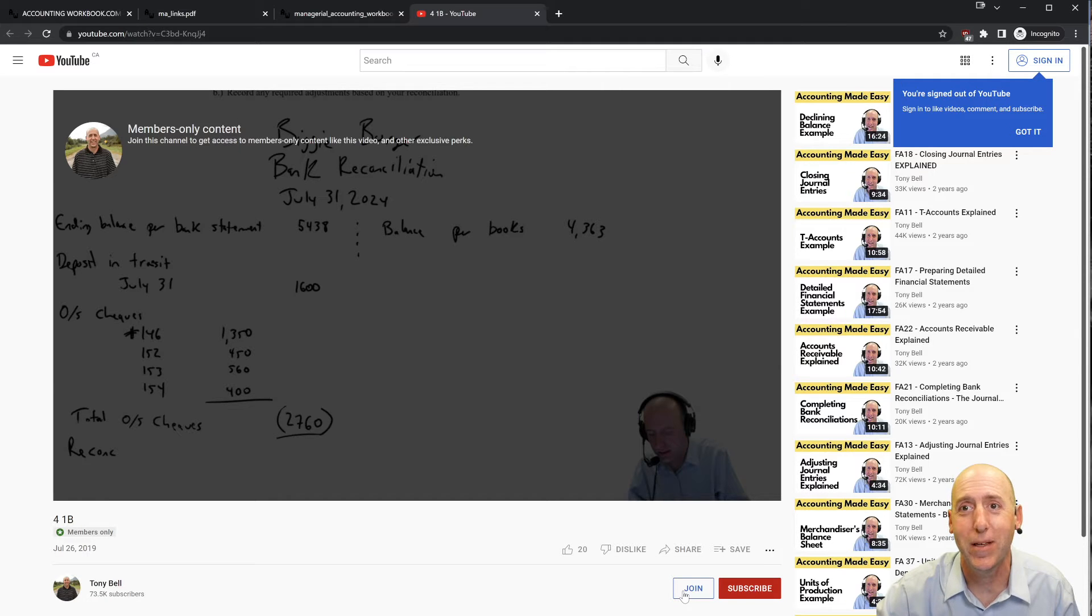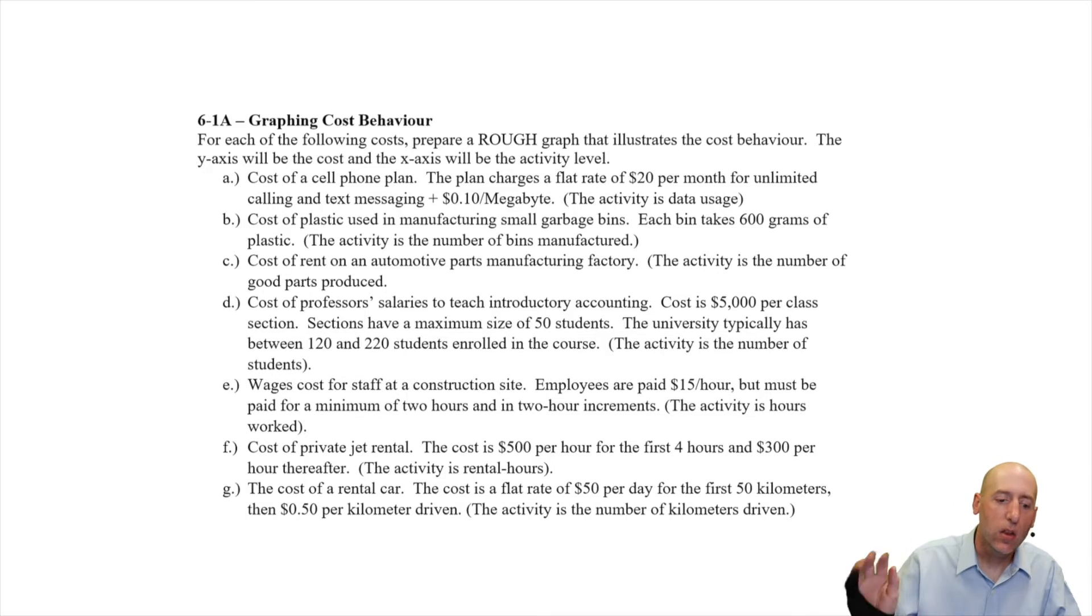Okay, let's jump into the problem. Let's examine problem 6-1-A. Let's read the problem and just see how we do. It says, for each of the following costs, prepare a rough graph. You don't have to graph this in detail with graph paper. You can draw rough lines. I'm just looking for general shapes here that illustrates the cost behavior. The y-axis will be cost, the x-axis will be activity level.